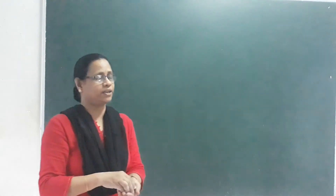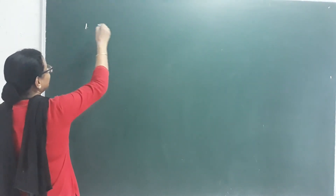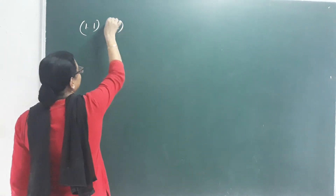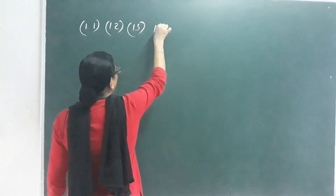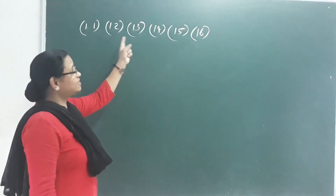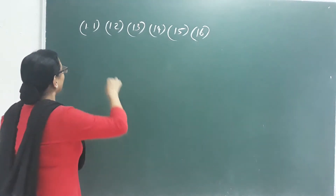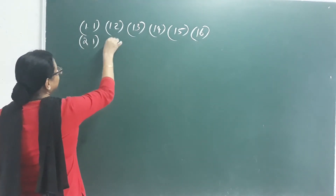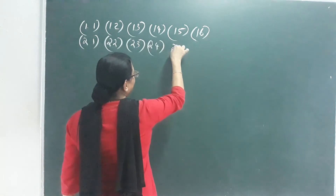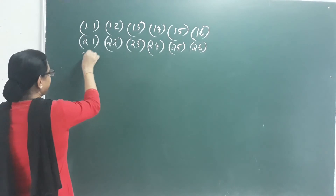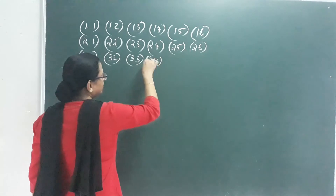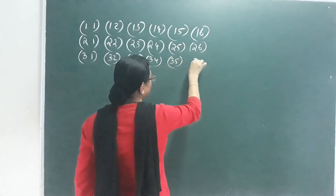Listing all outcomes: When die 1 shows 1: (1,1),(1,2),(1,3),(1,4),(1,5),(1,6). When die 1 shows 2: (2,1),(2,2),(2,3),(2,4),(2,5). When die 1 shows 3: (3,1),(3,2),(3,3),(3,4),(3,5),(3,6).